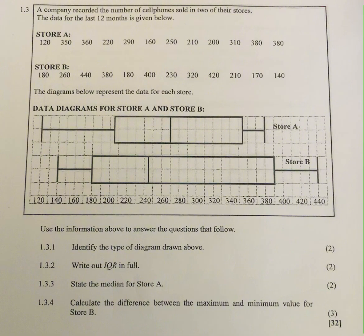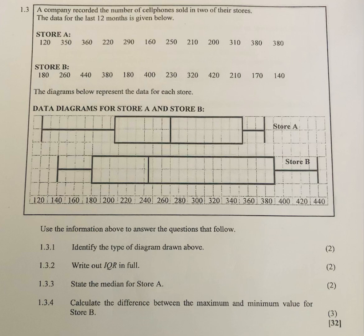Now for Store B: the minimum is 140, the max is 440, Q1 is 180, the median Q2 is approximately 242, and Q3 is exactly 385.